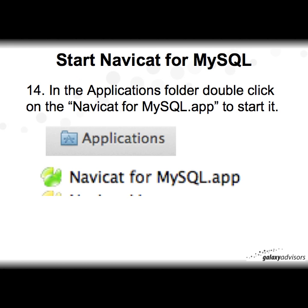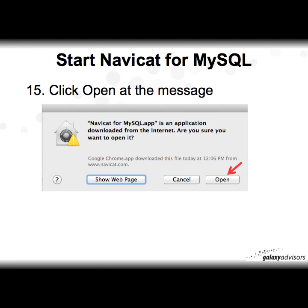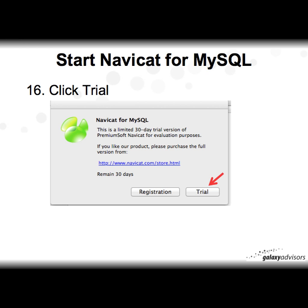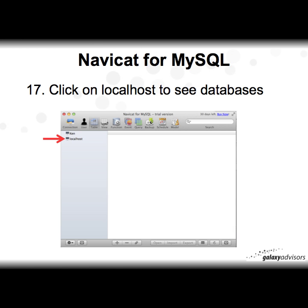Now we're all set to start NaviCat. In the Applications folder, double-click the NaviCat for MySQL app. A window will open double-checking that you want to open it — click 'Open'. Then click the trial version at the next window, and click on localhost to see the databases.